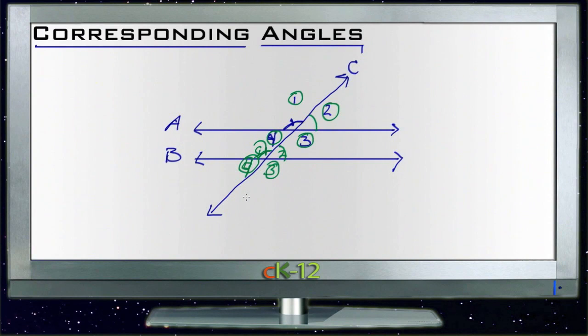So corresponding angles tell us that if you have two parallel lines crossed by a transversal, any two angles in the same position on both parallel lines will be equal angles. And it also tells us and works sort of in reverse.